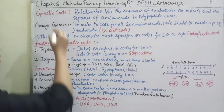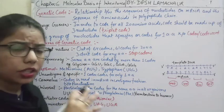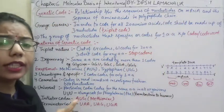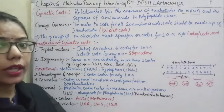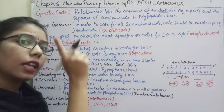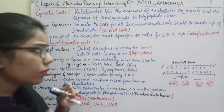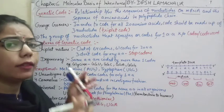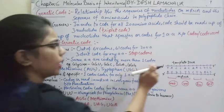So here we will understand what is this genetic code, how we are giving names, and how they are coded in the messenger RNA. Let's start — what is genetic code? We can say that it is the relationship between the nucleotides which are present in the mRNA, as well as the sequence of amino acids in the polypeptide chain.